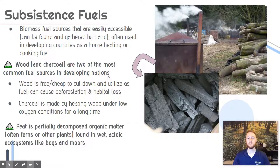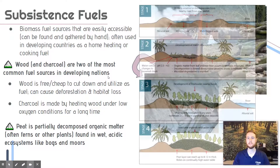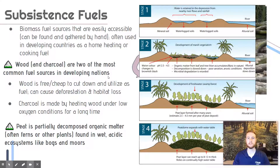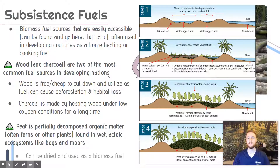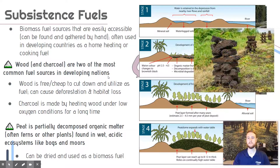We also have peat. Peat is basically the decaying, broken-down organic matter found in watery, acidic soils — in marshes, bogs, or sometimes called moors. Over time, the vegetation of the marsh dies, falls to the bottom of the water, and gets compressed by overlying soil and sediment layers into peat. Peat is partially decomposed, mostly dried organic matter, and you can dig it up and dry it into little bricks, making it a great subsistence fuel.